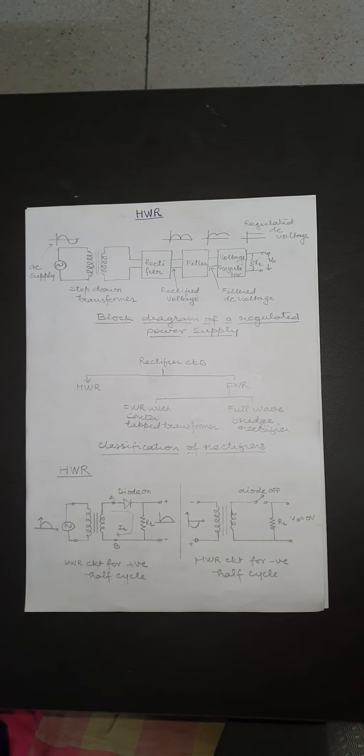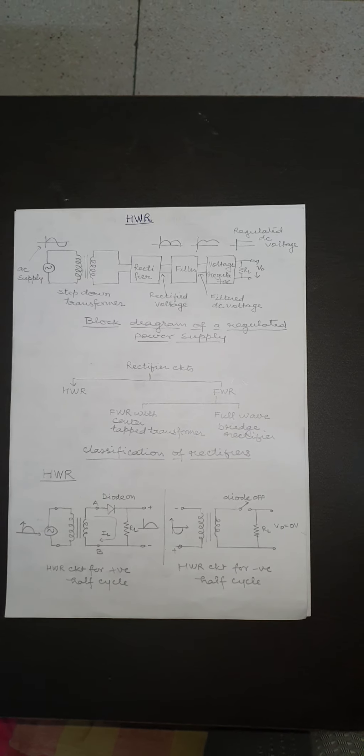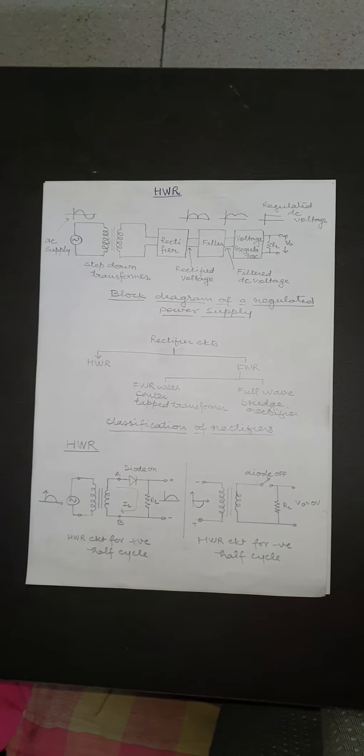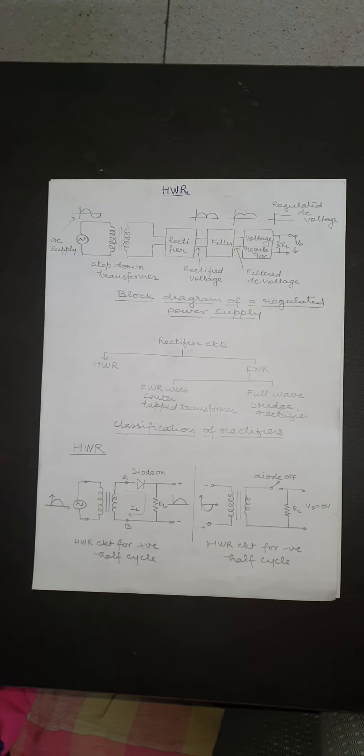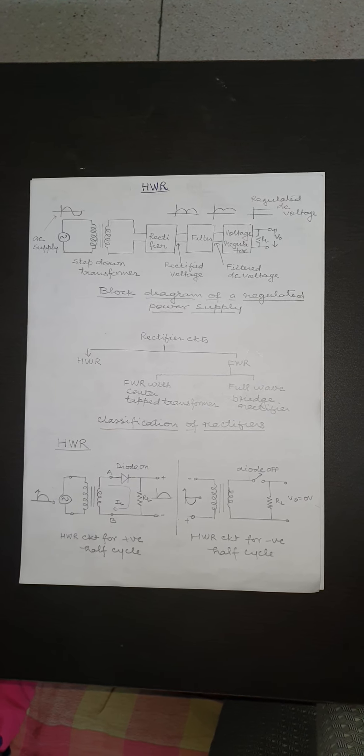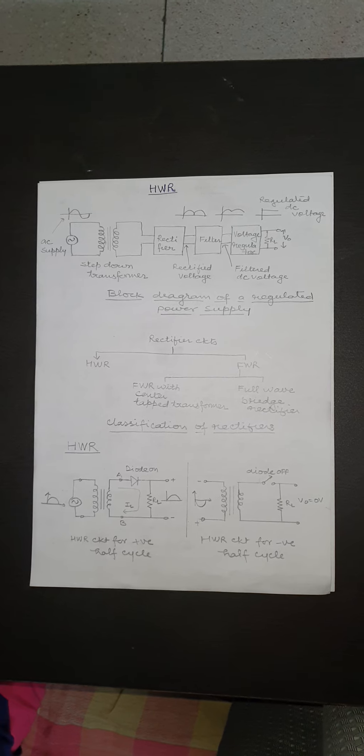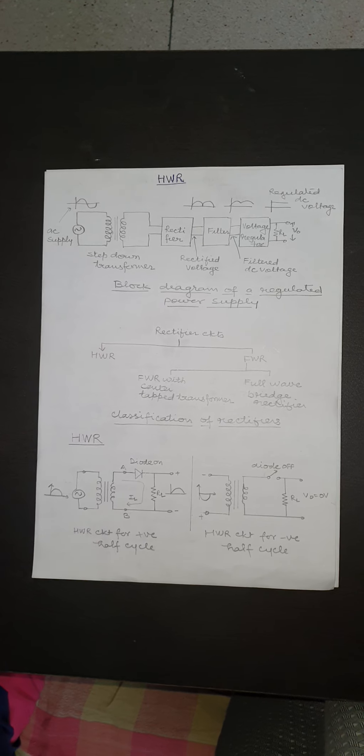A step-down transformer is used to reduce the AC main voltage to an adequately small value. This voltage is converted into pulsating DC by the rectifier, and there are two types of rectifier.